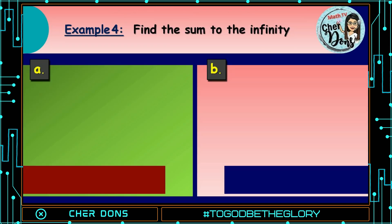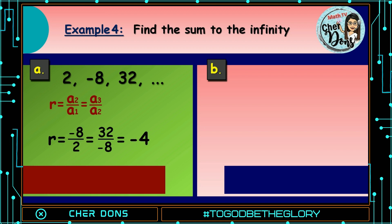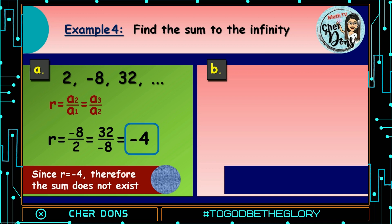Example number 4: Find the sum to infinity. For letter A, we have 2, negative 8, 32, and so on. Let us first find the common ratio. r equals a sub 2 divided by a sub 1, or a sub 3 divided by a sub 2. Plugging in: r equals negative 8 divided by 2, which equals negative 4. Or, 32 divided by negative 8, which is also negative 4. Note that r should be greater than negative 1 but less than 1. Since our computed value of r is negative 4, therefore the sum does not exist.